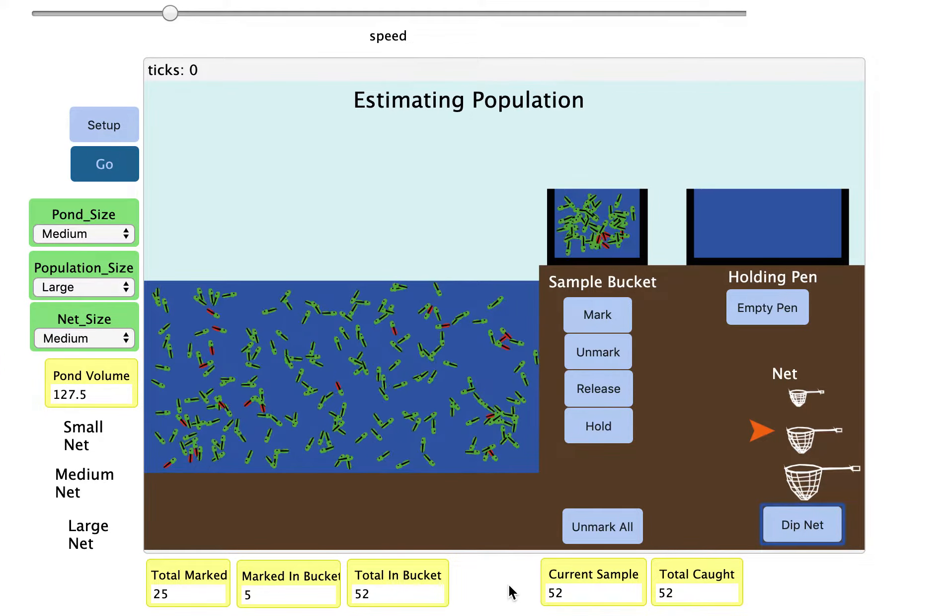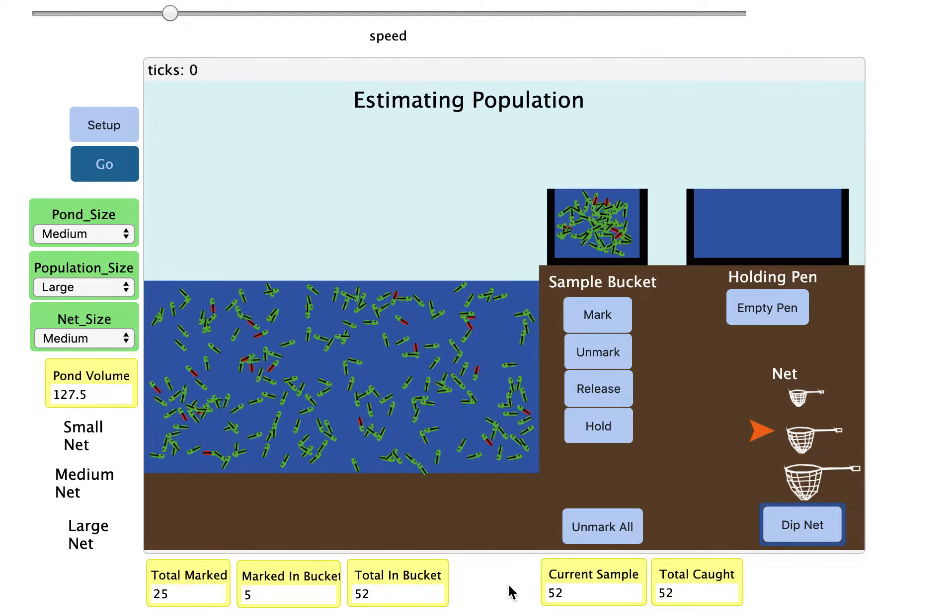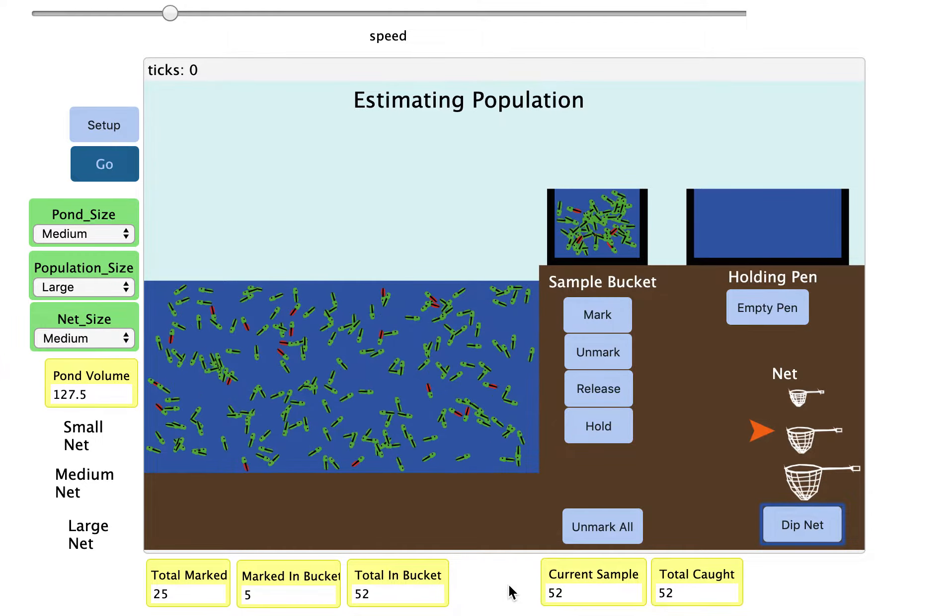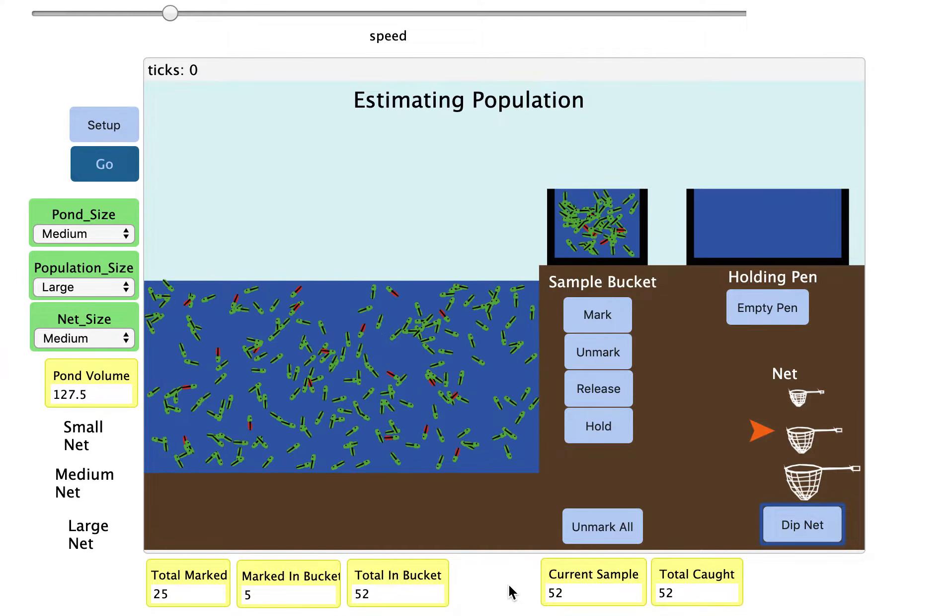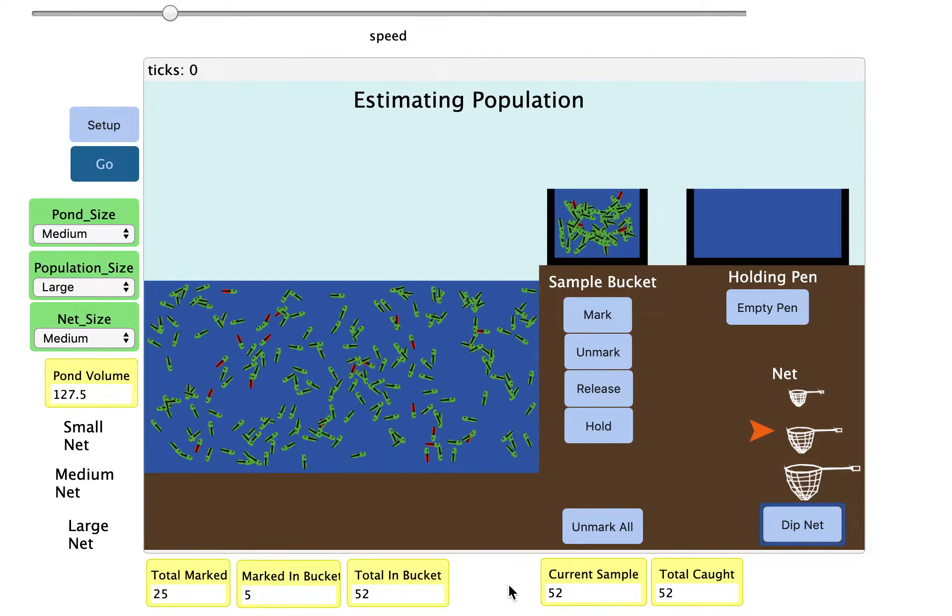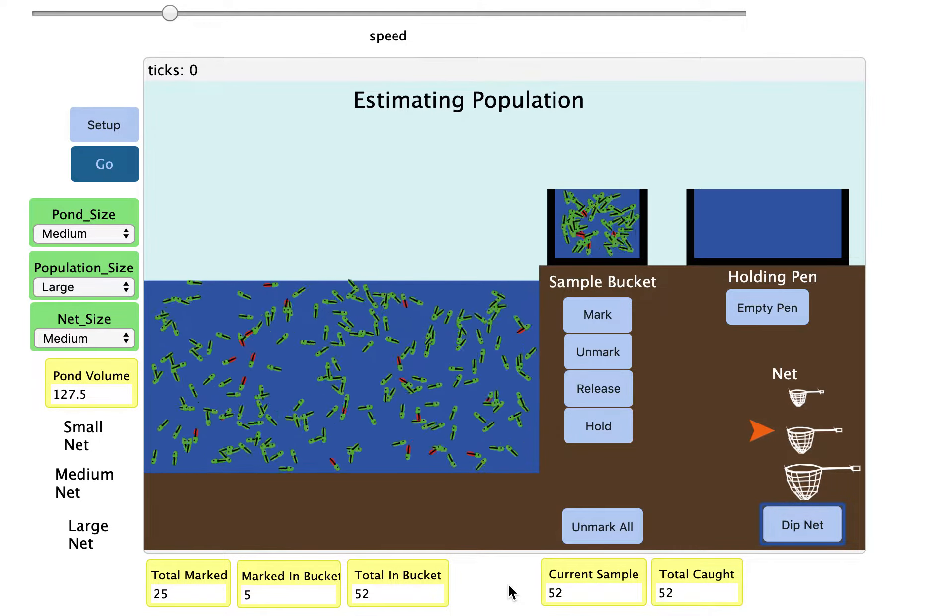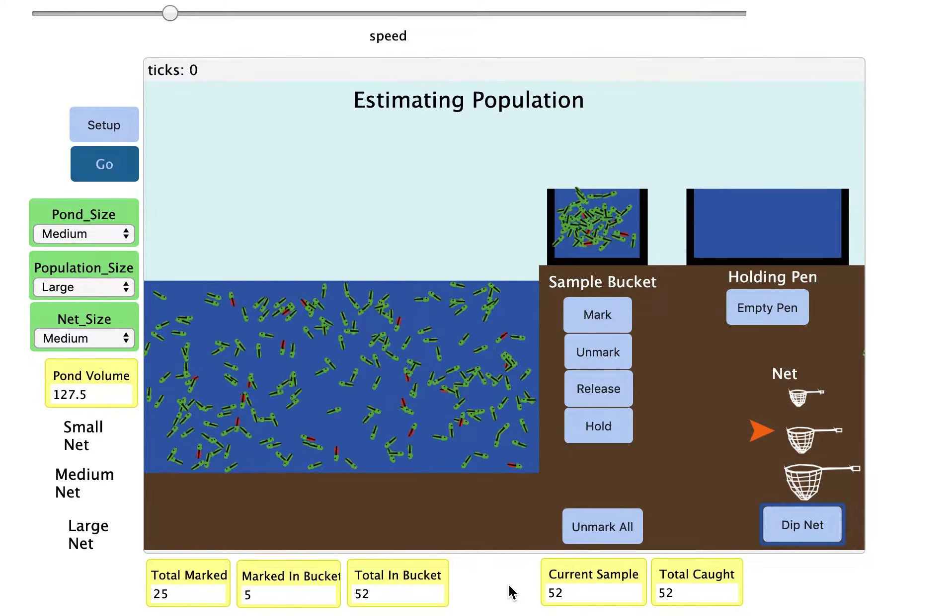I'm going to use this sample ratio 5 over 52 to estimate how many fish are in the entire tank, but now I have a larger sample size to use for my ratio. We're going to continue that six times.